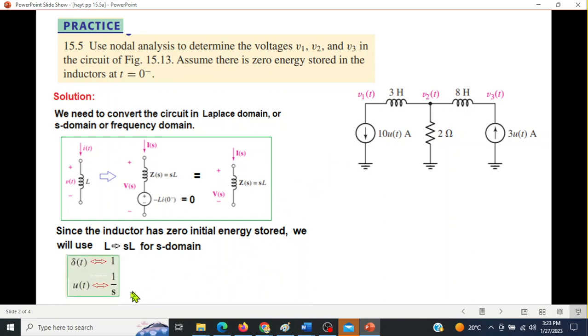Also, to convert the current sources, we know that U(t) is converted as 1 over S in S domain. So let's draw the new circuit. This is our new circuit. 3 Henry will become 3S, 8 Henry will become 8S.